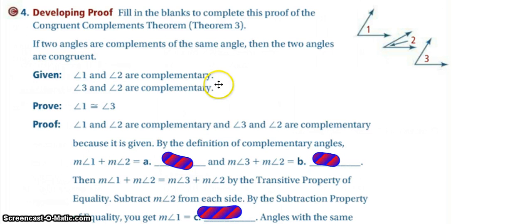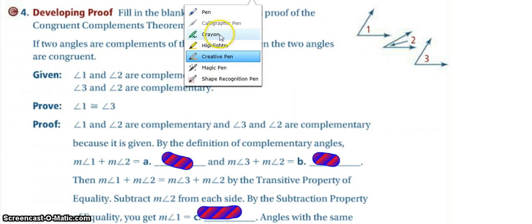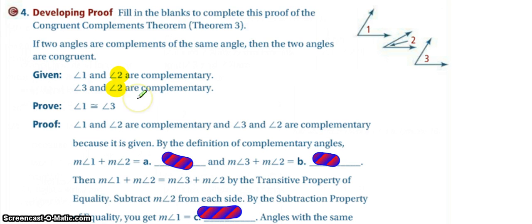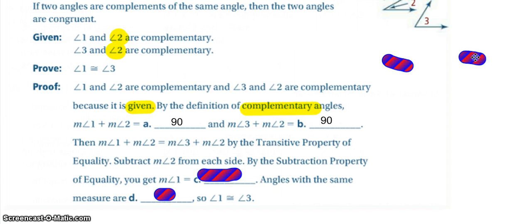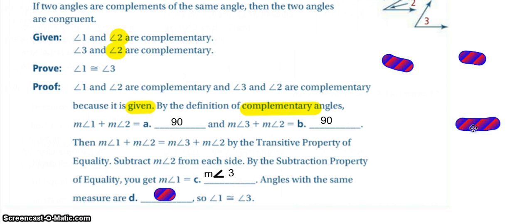In question four, you have two different complementary angle pairs: angles one and two, and angles three and two. You should immediately notice that angle two is used in both complementary pairs. If one and two are complementary and three and two are complementary — that's given, and we always start with the given. By the definition of complementary angles, angle one plus angle two equals 90, and angle three plus angle two equals 90. Then angle one plus two equals angle three plus two by the transitive property. Subtracting the measure of angle two from each side by the subtraction property of equality, we get that the measure of angle one equals the measure of angle three. Angles with the same measure are congruent, so angle one is congruent to angle three.